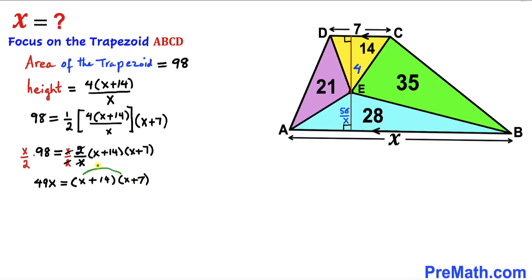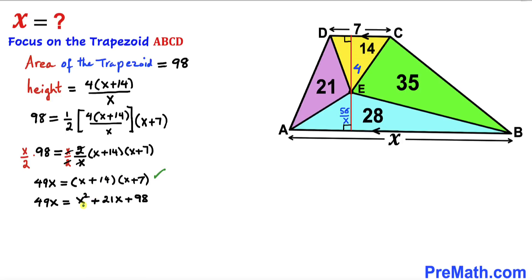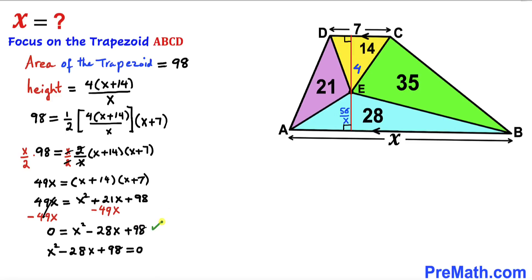Now let's do the double distribution: (x plus 14)(x plus 7) expands to x squared plus 7x plus 14x plus 98. Combining like terms, 7x plus 14x gives 21x, so the right-hand side becomes x squared plus 21x plus 98. Subtracting 49x from both sides gives 0 equals x squared minus 28x plus 98.